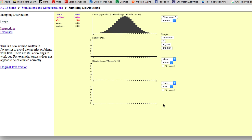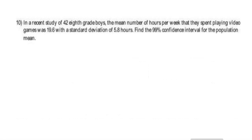The question your peer asked was in relation to the example that we did in class. Let me bring that example up. The example stated: in a recent study of 42 eighth grade boys, the mean number of hours per week that they spent playing video games was 19.6 hours with a standard deviation of 5.8. The question said: find the 99% confidence interval for the population mean.